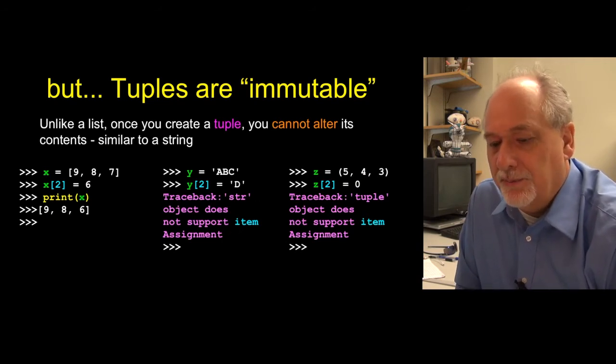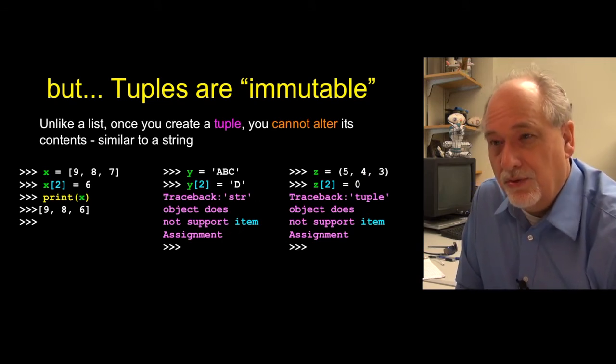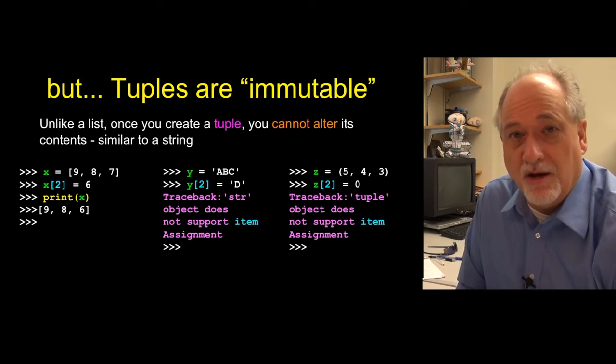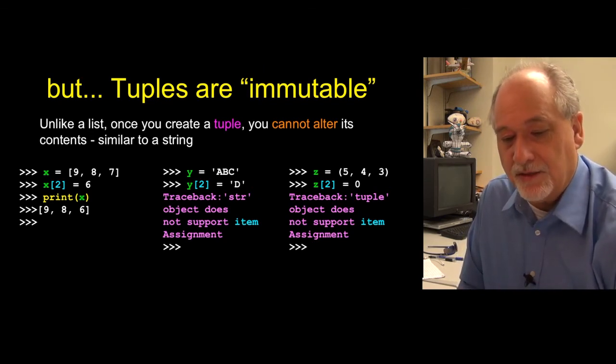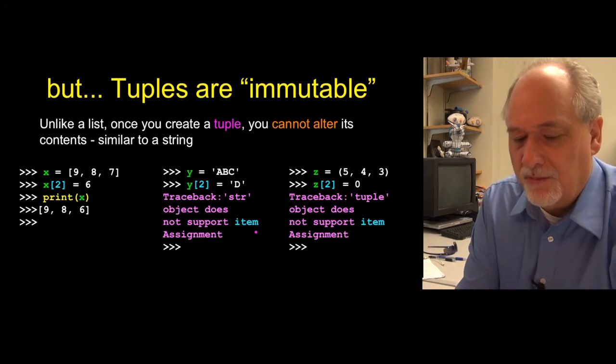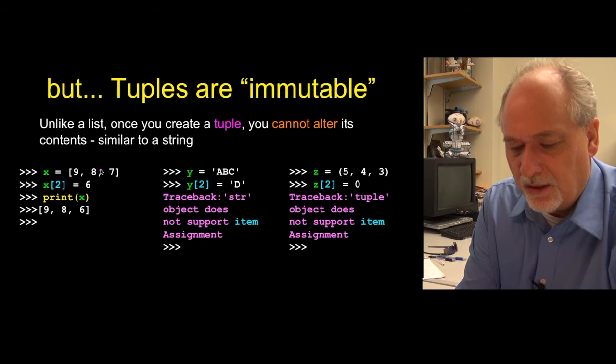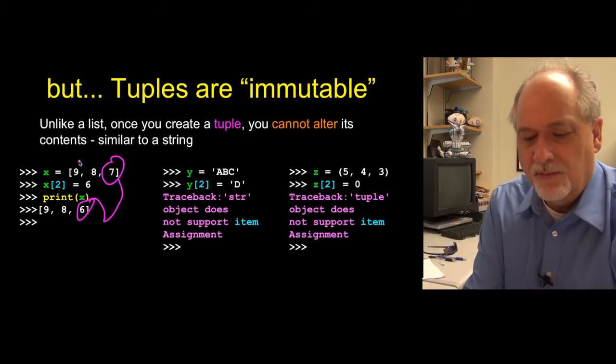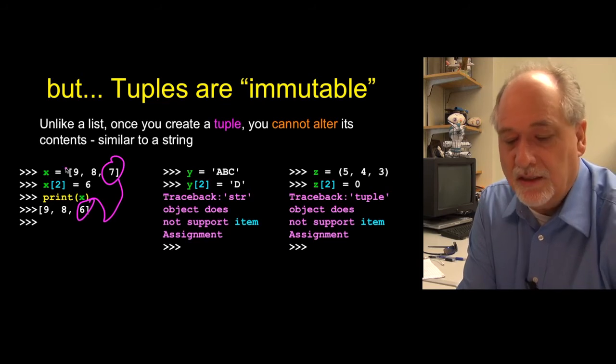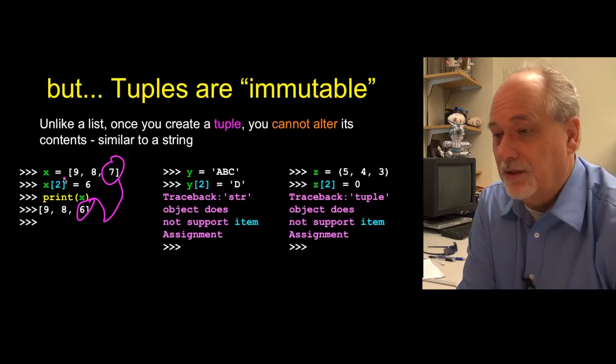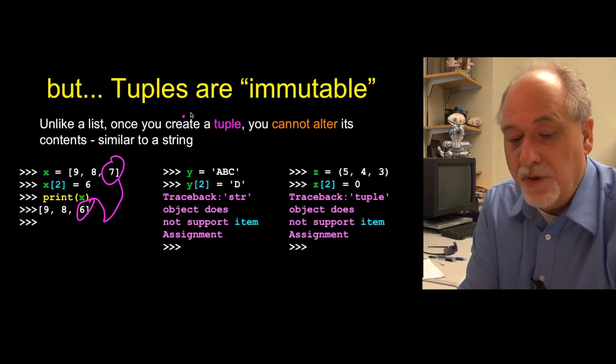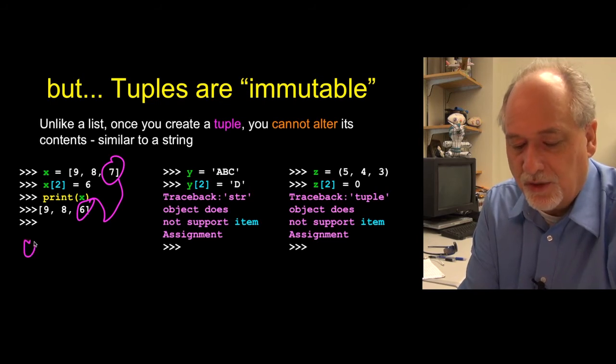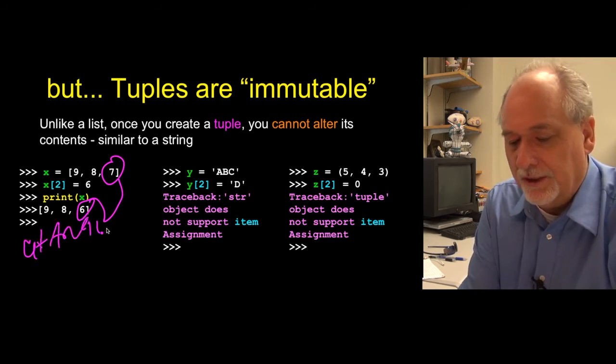The difference between tuples is that they are immutable. Once you create the tuple, you can only sort of assign a tuple, but you can't modify it. You can modify a list, so if we take a look at a list here, we make a list that's nine, eight, seven, and we say x sub two equals six, well, that just means this seven becomes a six, and that's just natural, meaning we can reassign slots. We can delete things, we can insert things, we can mutate them, we can change them, so they're changeable.